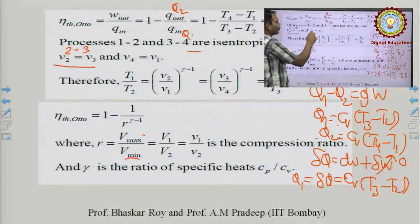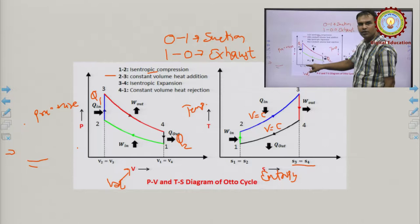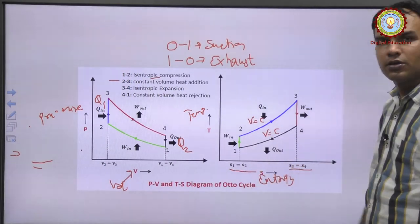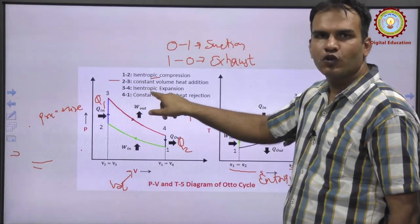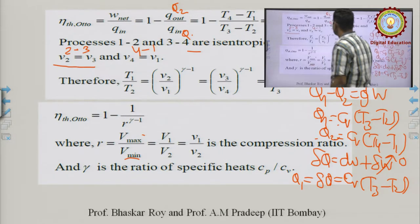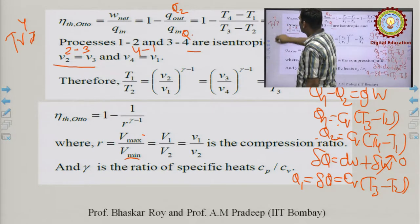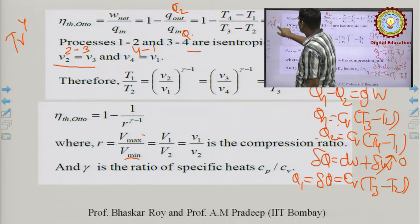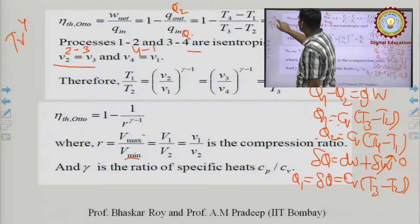Since 4→1 is isochoric, V₁ = V₄; and since 2→3 is isochoric, V₂ = V₃. Processes 1→2 and 3→4 are isentropic (S₁ = S₂ and S₃ = S₄). For an isentropic process, TV^(γ−1) = constant.